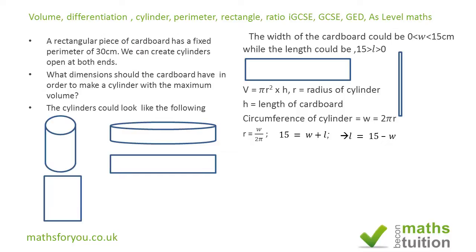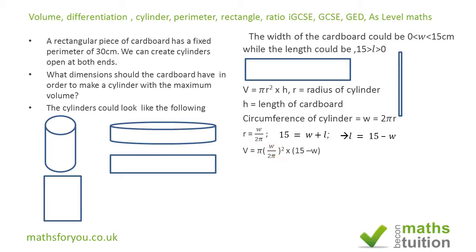If we plug these expressions into the formula for volume, we end up with V = π × (w / 2π)² × (15 − w). Note that the squared applies to the entire (w / 2π) term. Opening the brackets and simplifying, we get a polynomial expression for V in terms of w.